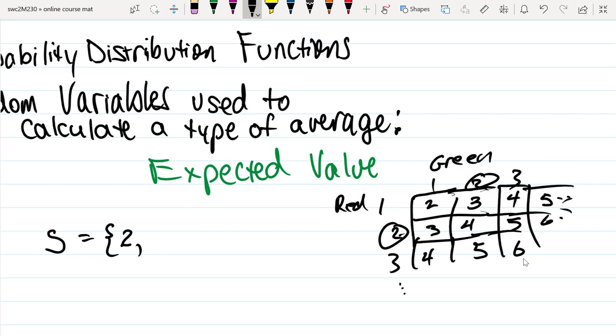Now the set of values that those sums could be from rolling those two dice, the smallest one would be a two and we know that the largest one would be if we were to have two sixes thrown from those two dice, so that would be a twelve.